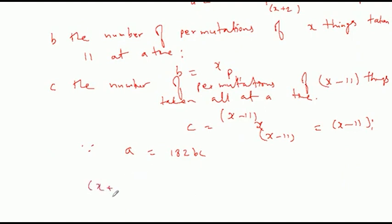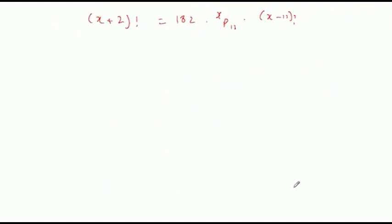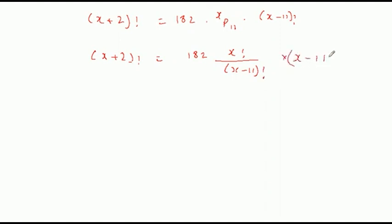इसे आप लिख सकते हैं: X plus 2 का factorial — जो हमने ऊपर देखा है — 182 into X P 11, और यहाँ C का X minus 11 का factorial। तो यहाँ: X plus 2 का factorial equal to 182 into X का factorial by X minus 11 का factorial, into X minus 11 का factorial — और इससे यह cancel हो जाएगा।